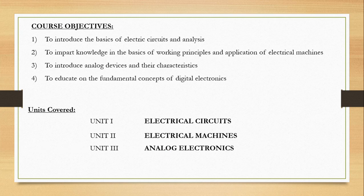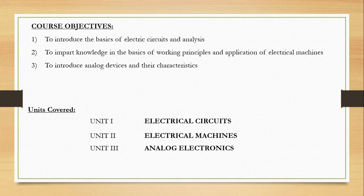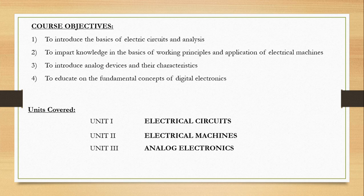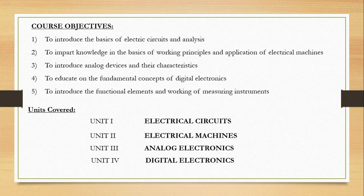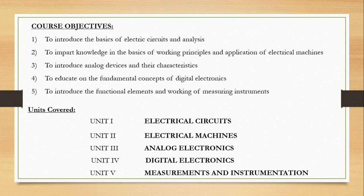For that we have to know unit number 3 analog electronics. Fourth objective is to educate on the fundamental concepts of digital electronics, which can be reached by knowing unit number 4 digital electronics. And the fifth objective is to introduce the functional elements and working of measuring instruments. That objective can be reached by knowing unit number 5 that is measurements and instrumentation.